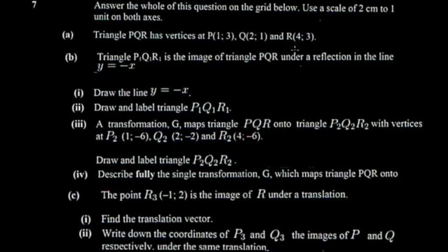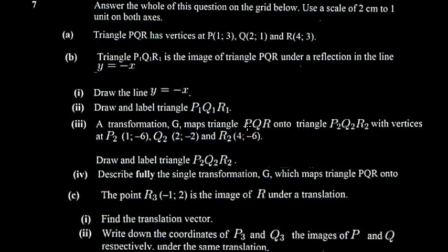Looking at the coordinates for the triangles: we have points around (1,3), (2,1), and (4,-6). On the y-axis, the extreme value I'm seeing is negative six, so I need to make sure negative six is mapped on the graph. On the x-axis there aren't many negatives — just negative one and four — so I'll include maybe negative two and go forward from there. On the y-axis I'll go from negative six upwards.